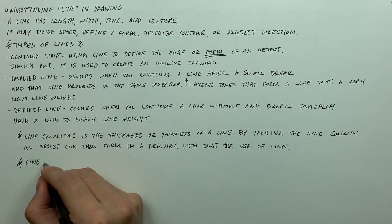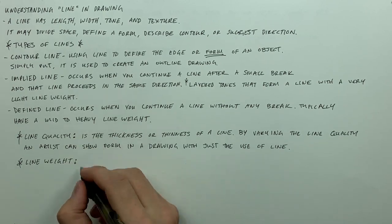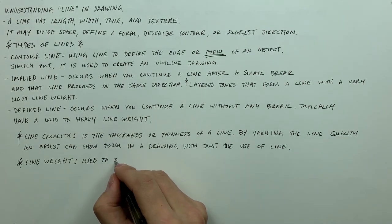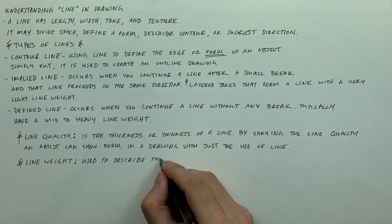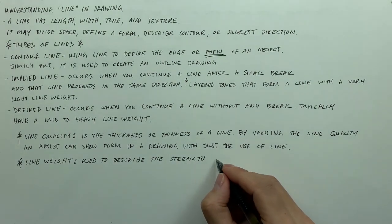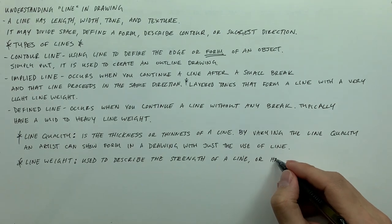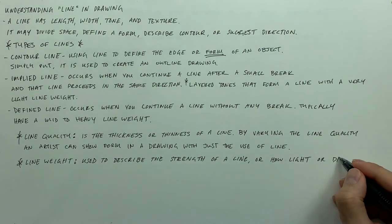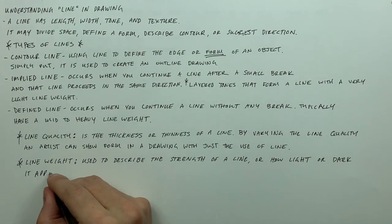And the last is your line weight, and this is what I was talking about with the implied line. Line weight is used to describe the strength of a line or how light or dark that line appears on your paper.